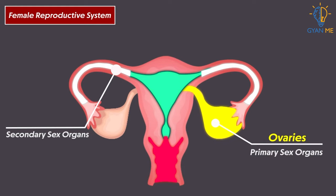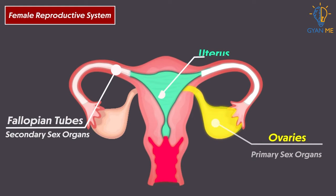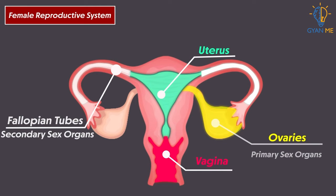Ovaries are the primary sex organs in females, while all other organs like fallopian tube, uterus, vagina, etc. are examples of secondary sex organs.